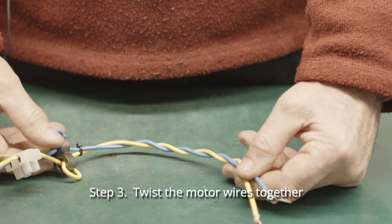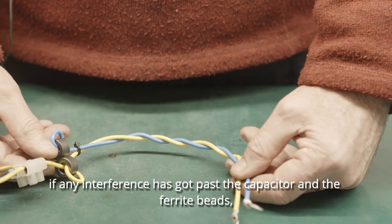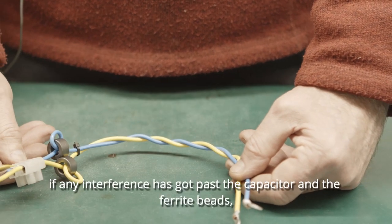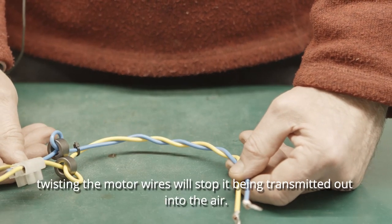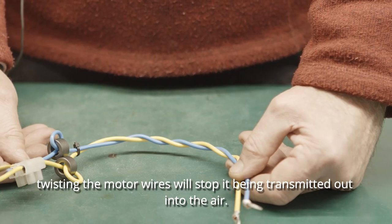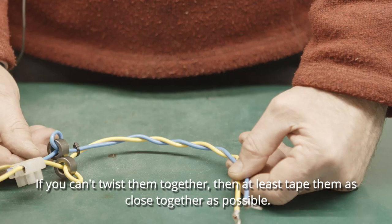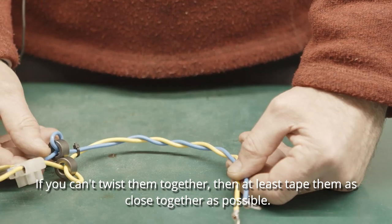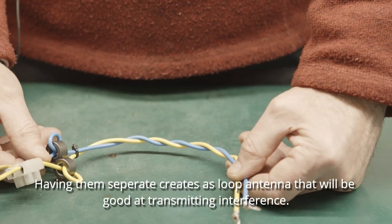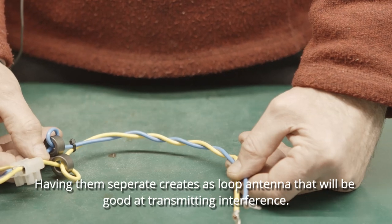Step three, twist the motor wires together. If any interference has got past the capacitor and the ferrite beads, twisting the motor wires will stop it being transmitted out into the air. If you can't twist them together then at least tape them as close together as possible. Having them separate creates a loop antenna that will be good at transmitting interference.